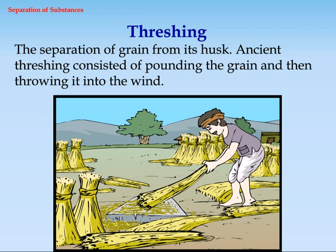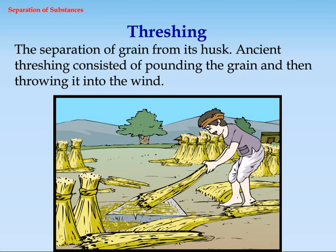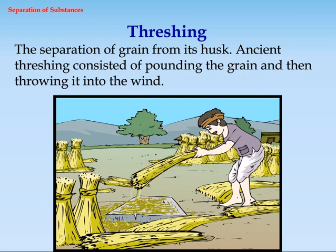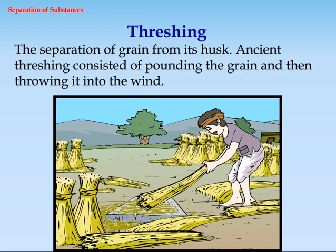Threshing. The separation of grain from its husk. Ancient threshing consisted of pounding the grain and then throwing it into the wind.